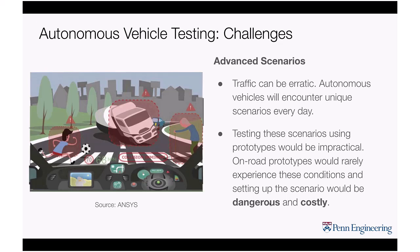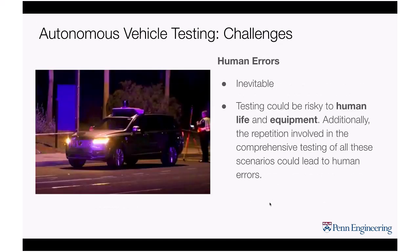Another challenge is that when autonomous vehicles encounter unique scenarios not seen in simulation, testing with a prototype is impractical. If we have an on-road prototype that rarely sees these conditions and we want to set up a specific scenario, it can be very dangerous and costly. Additionally, human errors are inevitable — as with the Uber incident — and as you increase the sample space of testing, errors can endanger human life and result in expensive equipment loss.